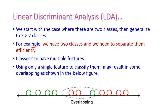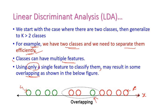Next, let us see an example for LDA. Here we have two classes and we need to separate them efficiently. In this diagram, the green color circle is one class and the red color circle is another class. Overlapping of those two classes is happening here, meaning a class may have multiple features, but here we take only one feature. Hence, some overlapping may occur, and that is shown in this figure — in this area, overlapping occurs.